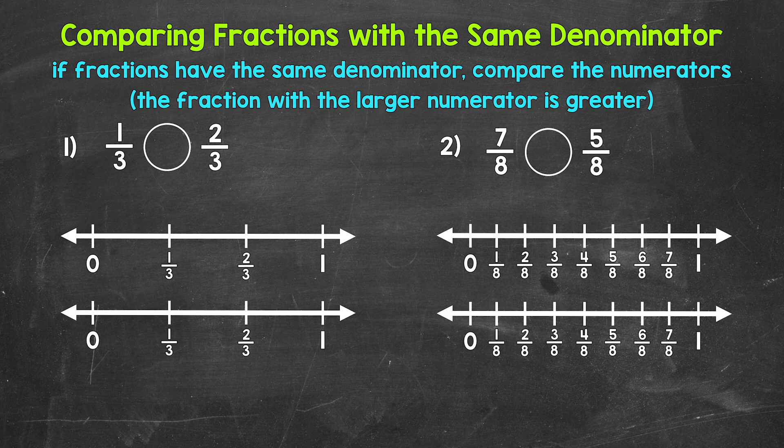Let's jump into number one, where we have one-third and two-thirds. So reading this from left to right, we have one-third is greater than, less than, or equal to two-thirds.